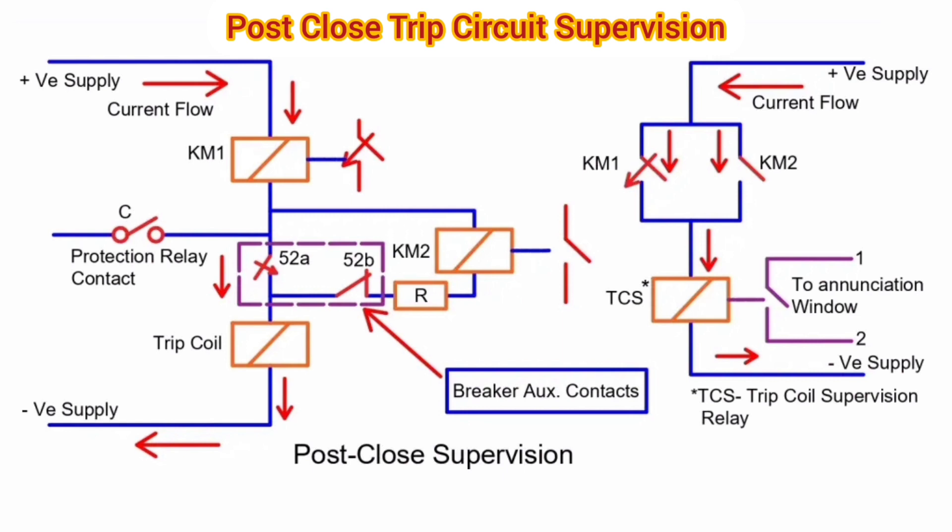In case of a fault in the supply system, KM1, trip coil, or wiring, the contact of KM1 will remain in an open state and thus the TCS will be inoperative. The NC contact of TCS outputs to the annunciation window, which shows that the breaker's trip circuit is faulty.